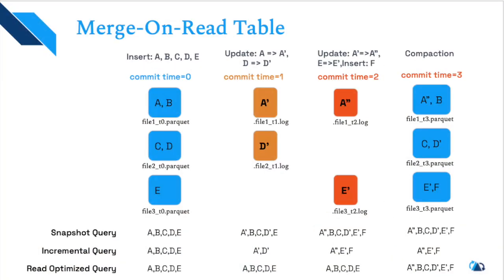Now let's explore the same scenario for Merge-on-Read (MoR) tables. Remember, in MoR tables your updates are stored in a log file, and after compaction they are converted into a base file. At time T0 with records A, B, C, D, E: snapshot query returns A, B, C, D, E; incremental query returns A, B, C, D, E; and read-optimized query also returns A, B, C, D, E. Note that creating a MoR table creates two views: RO (read-optimized) and RT (real-time).